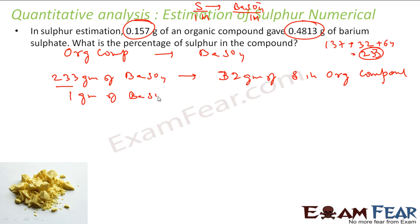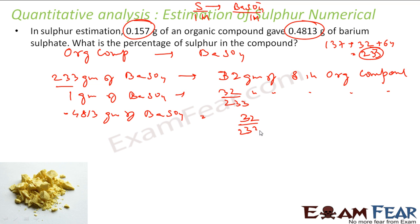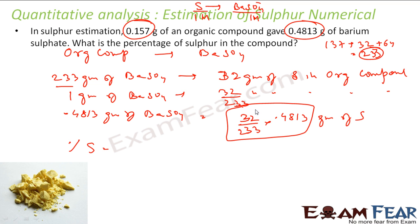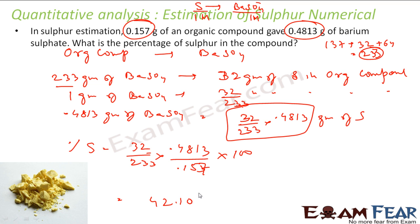Since we obtained 0.4813 grams of barium sulfate, this implies (32/233) × 0.4813 grams of sulfur in the organic compound. To find the percentage of sulfur, take this value, divide by the weight of the organic compound, and multiply by 100: (32/233) × 0.4813 divided by the mass of the organic compound × 100 = 42.10%. That is the percentage of sulfur.